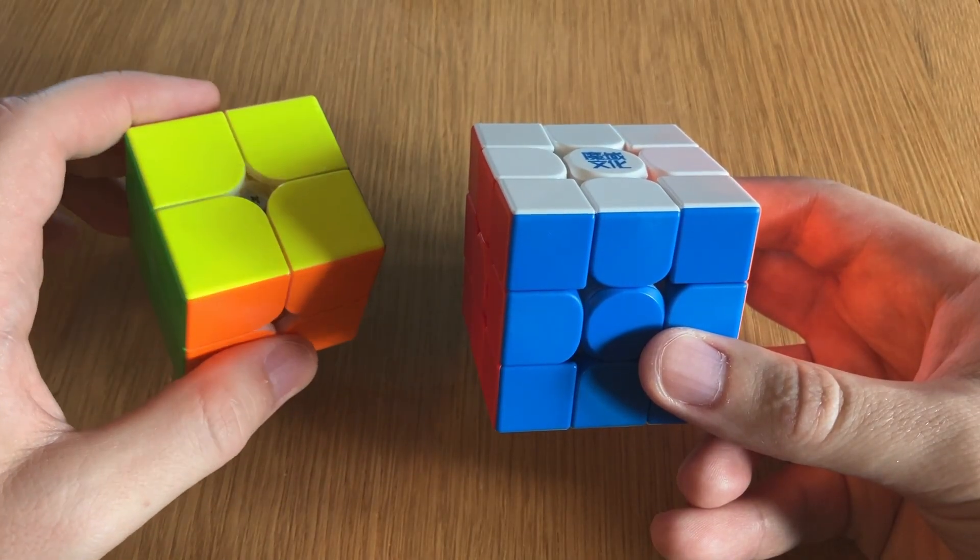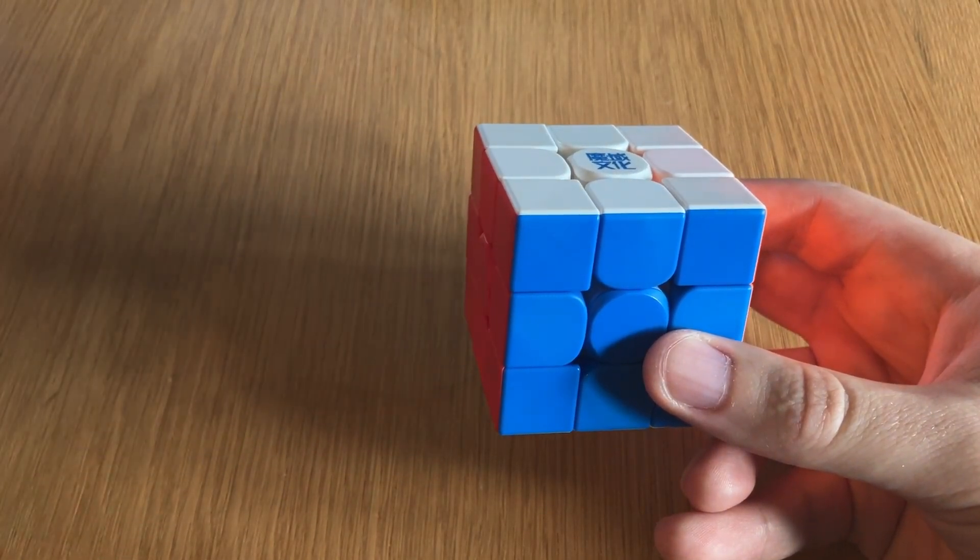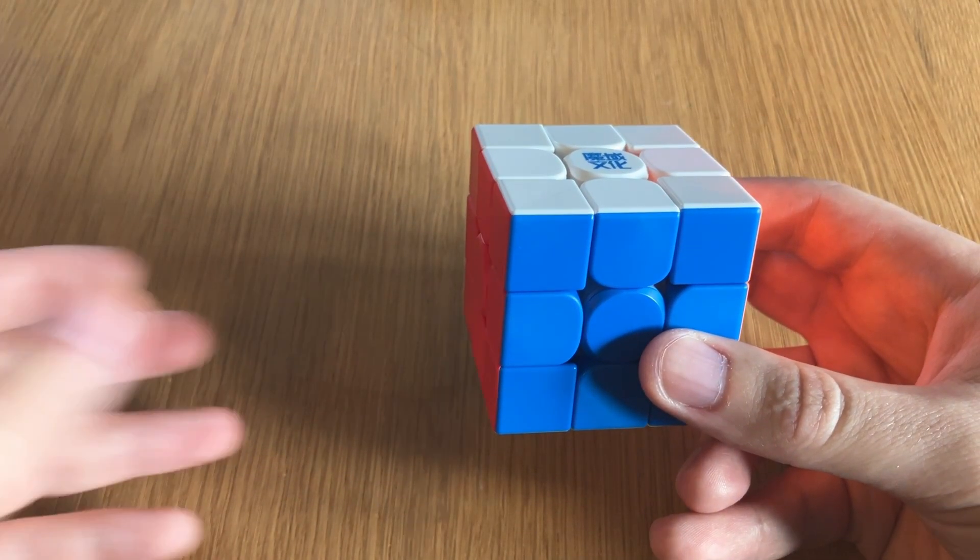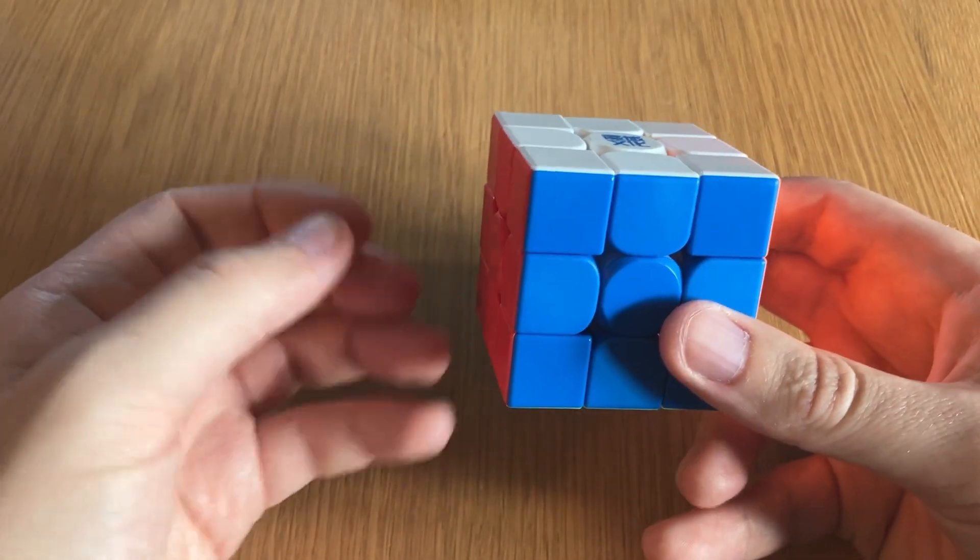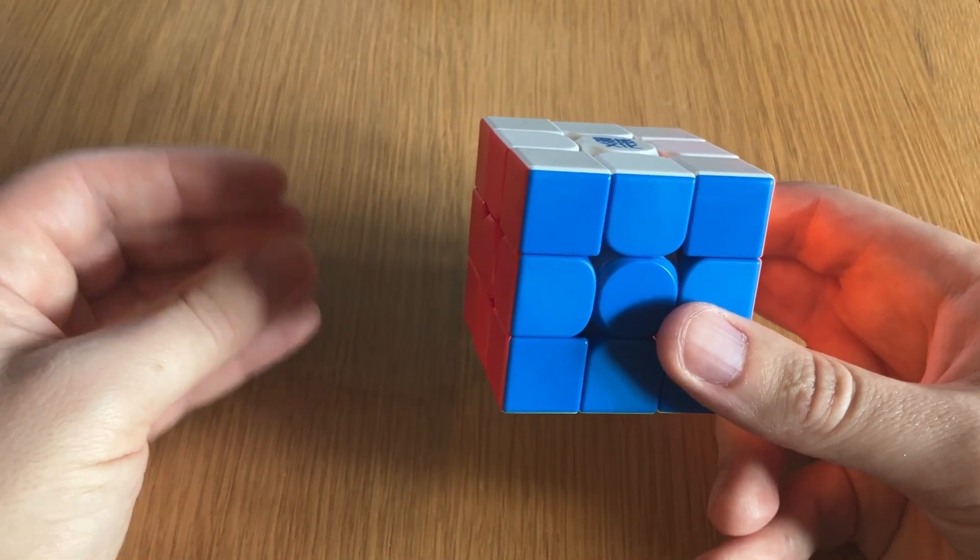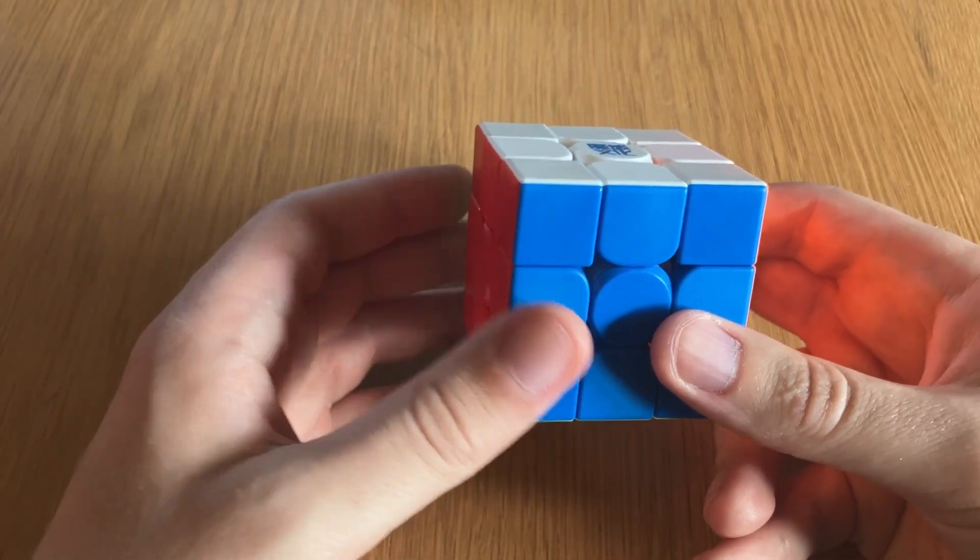So this is what leads to more control over how the cube turns, because we essentially have two 3x3s that we can each adjust independently in a way.